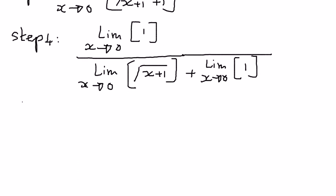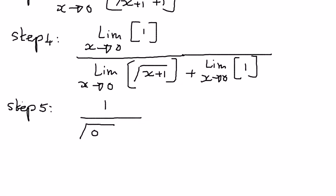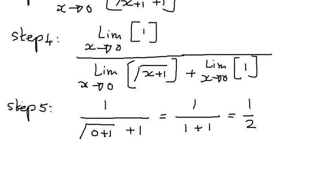In step number 5, we are ready to simplify the math. We're going to substitute the value of x equal to 0. In the numerator part, the limit of a constant number is equal to the constant number itself. In the denominator part, we substitute x equal to 0: the square root of 0 plus 1, plus the limit of the constant 1 as x approaches 0, which equals 1. When we simplify, the numerator remains as 1. The denominator: square root of 1 is 1, plus 1 equals 2. So 1 divided by 2 is what we are left with.